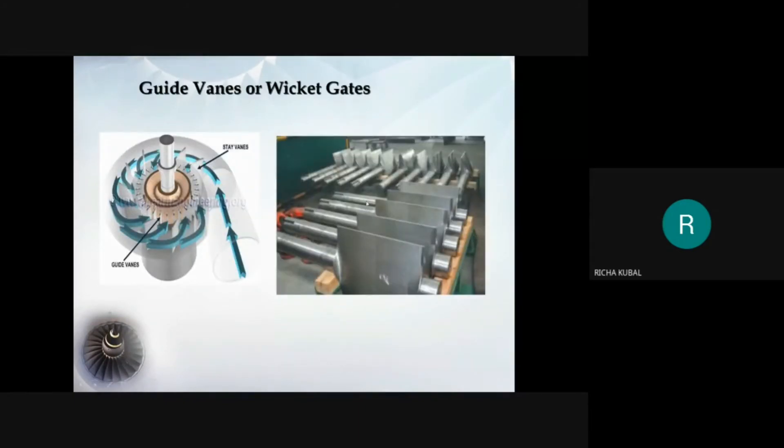These are the wicket gates, also known as guide vanes. These vanes are fixed in position but they can rotate around their respective pivots. The function of guide vanes is to direct the water from casing to moving vanes of runner without shock at inlet. Hence, to achieve smooth and shockless entry to the runner, the velocity of water must be kept tangent to the inlet tip of runner.